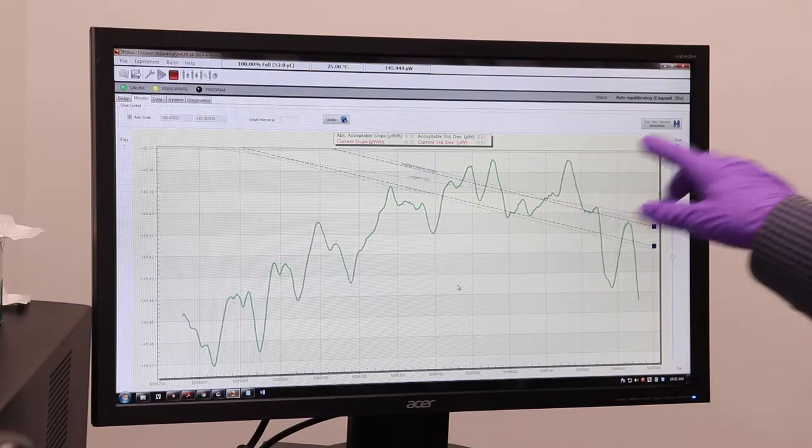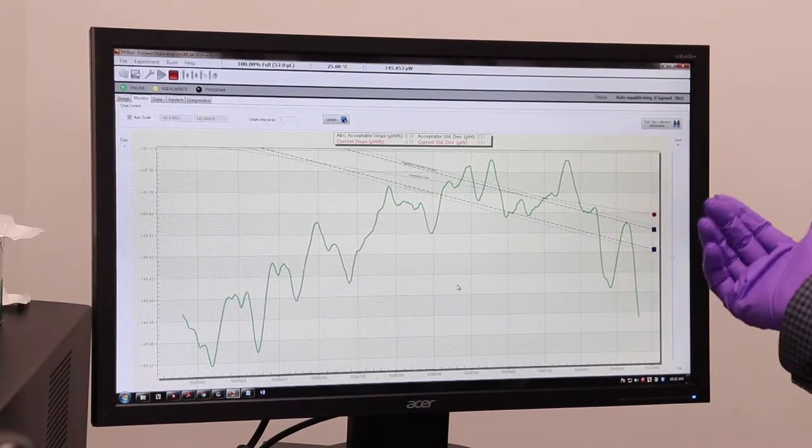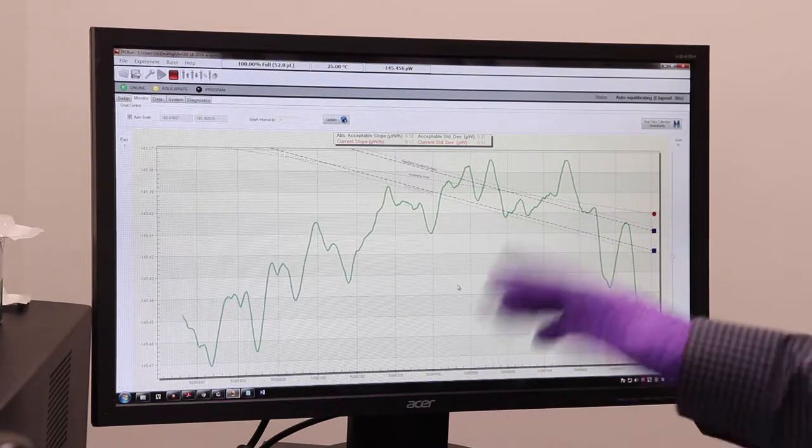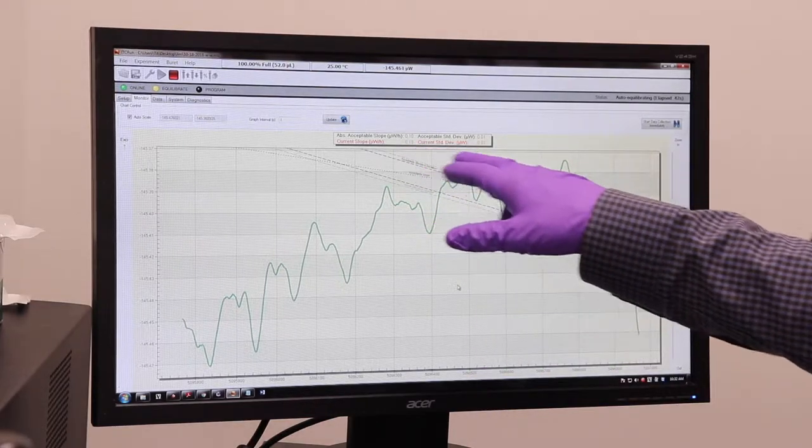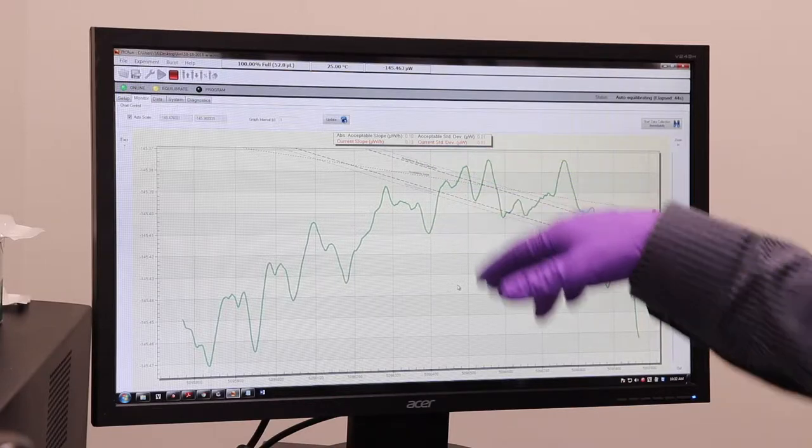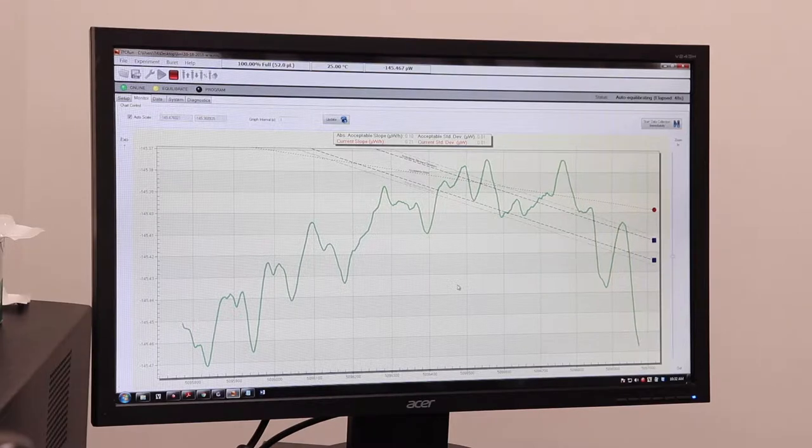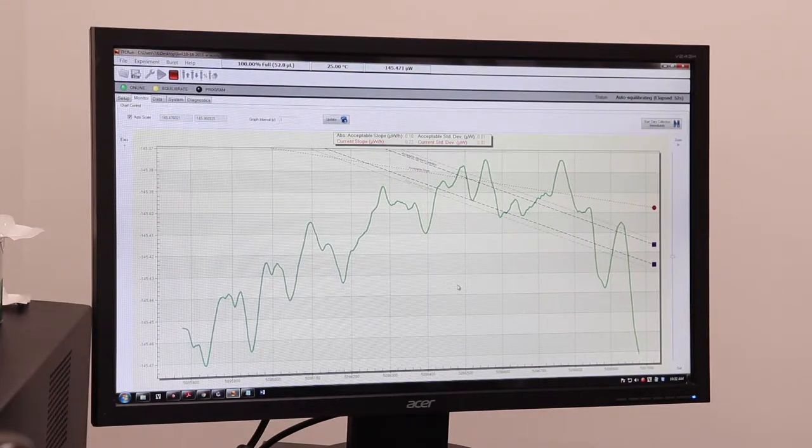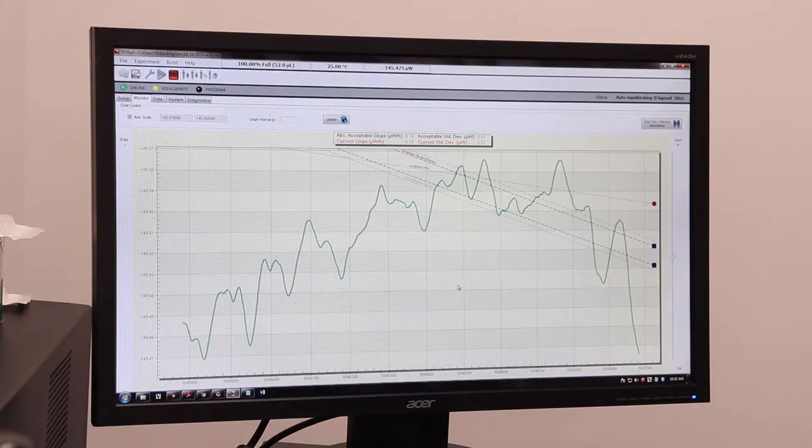So it's going to monitor the slope and the standard deviation until it hits an acceptable value for both of them. And then it's going to start the experiment where it's going to wait 300 seconds and then do the first injection. If you're really impatient, you can just hit this start data collection immediately button here. I would suggest it, but if you want to, you can. So right now we're just going to wait until the slope and the standard deviation looks good. Both of them have to hit. And then it'll start. So depending on your sample, could take 10 minutes, could take an hour. We'll see.